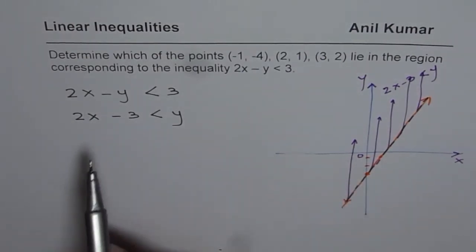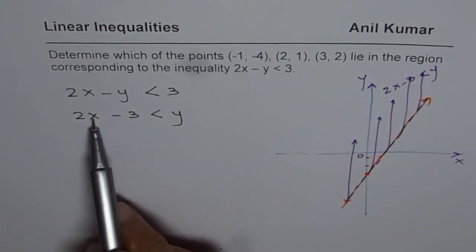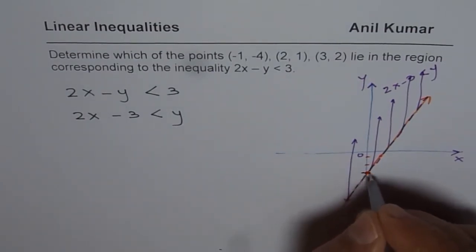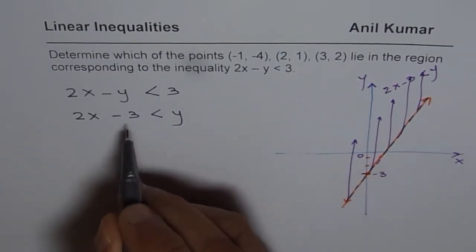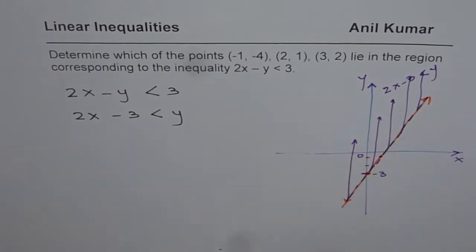If I substitute 0 here, what do I get? I get -3, so that was our y-intercept, -3, and then the slope 2. So that gives us the line.